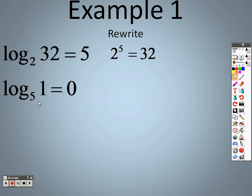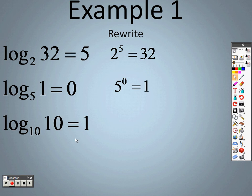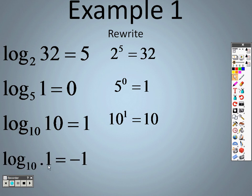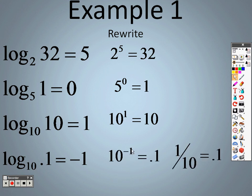When you rewrite the next problem, the base is whatever the little number is, so it'll be five to the zero equals one. For the one with a little ten, the base is ten, so it's ten to the first power equals ten. This one can have decimals — it will be ten to the negative one equals 0.1, and the reason that works is a negative exponent means one over ten, which is one-tenth, or 0.1.